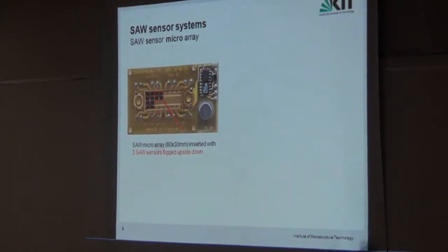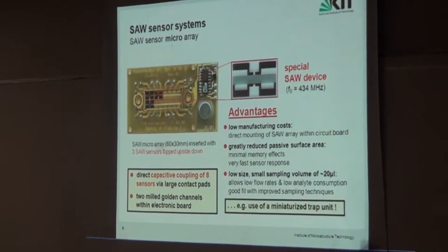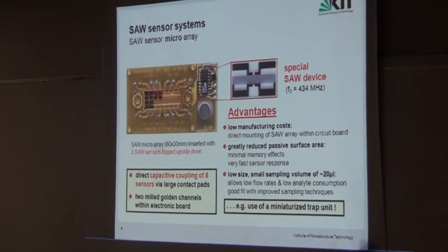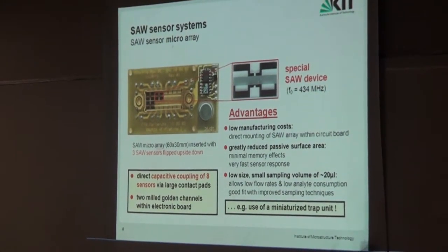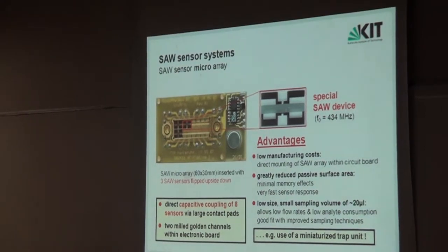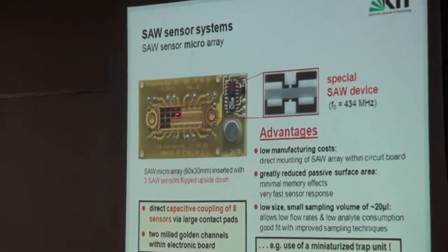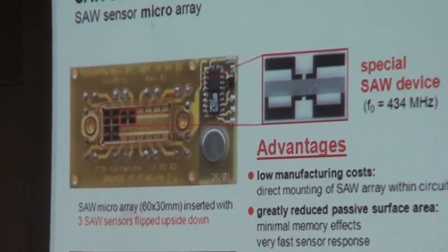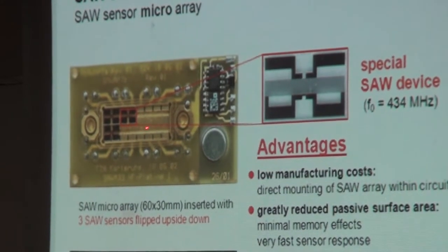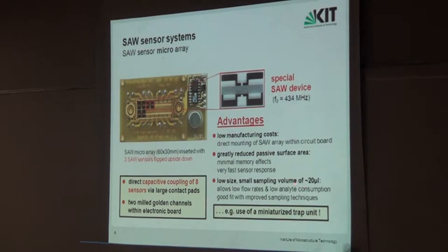The array uses self-made SAW devices with the acoustic path and interdigital transducers in the middle generating the acoustics. The sensing path is covered by a microfluidic channel leading gas across the sensors — meaning we guide the gas through the high-frequency electronics. Eight sensors fit inside in a four-by-four arrangement. This gives a greatly reduced passive surface area and very low sampling volume, which is beneficial for further sample treatment before gas detection.